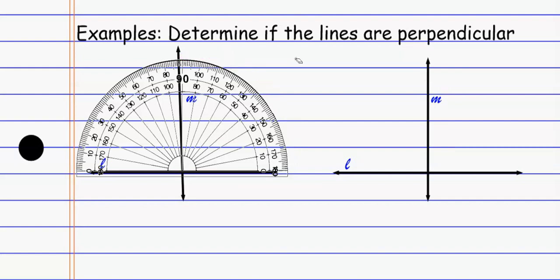So I'm going to say that M and L are not perpendicular. And again, I'm just going to use that little symbol for perpendicular so I don't have to write it out.